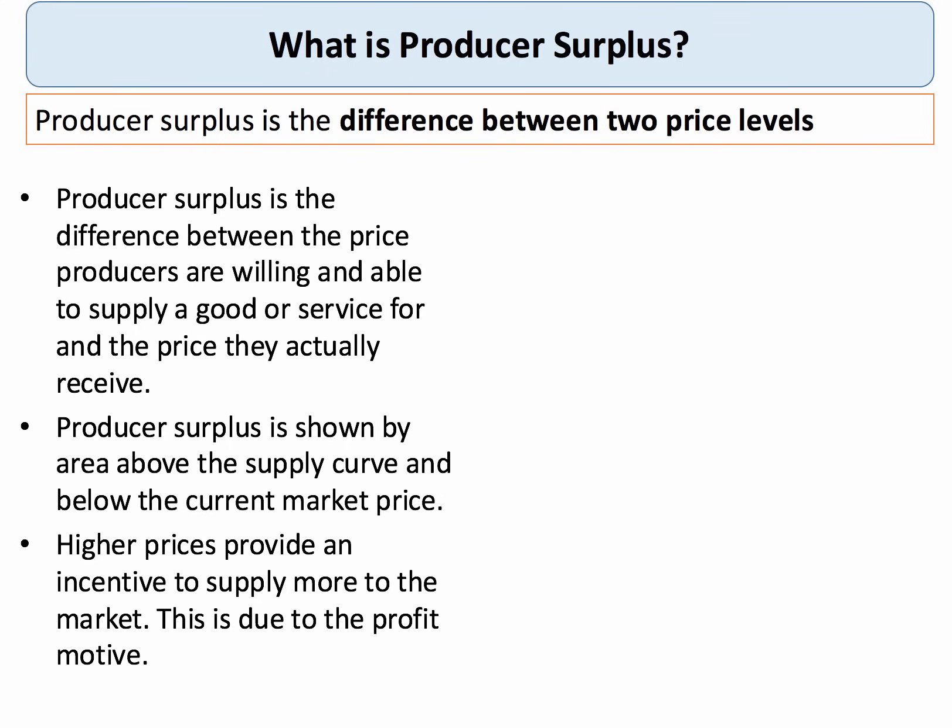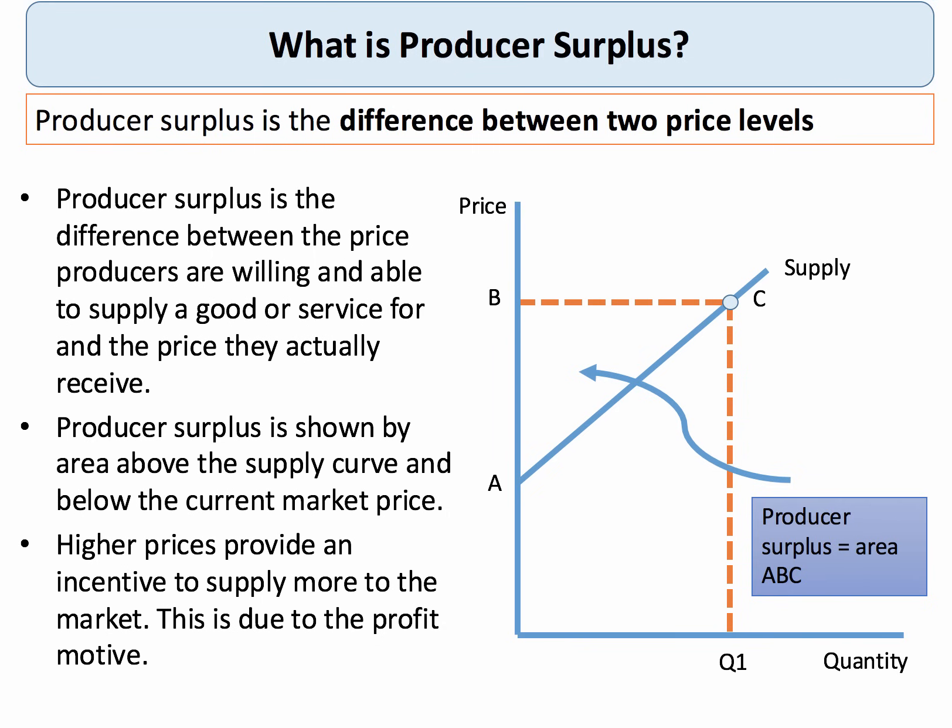Producer surplus. Producer surplus is the difference between the price the supplier or producer is willing and able to supply a good or service at, and the price they actually get in the market. So the area of producer surplus is shown by the area above the supply curve and below the current market price. If the market price is B, the supplier supplies quantity Q1, and the area of producer surplus is the triangle ABC.